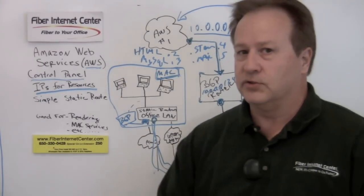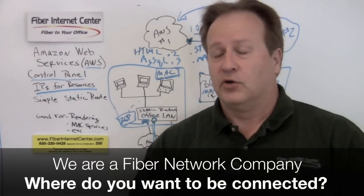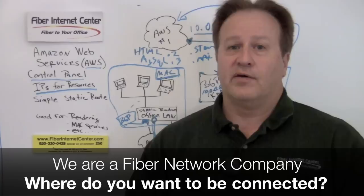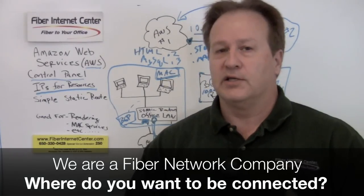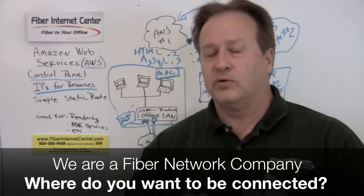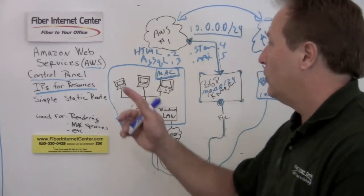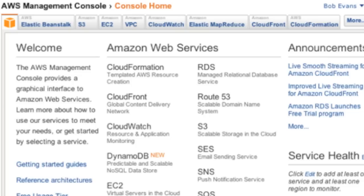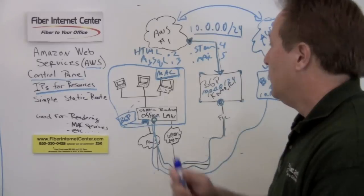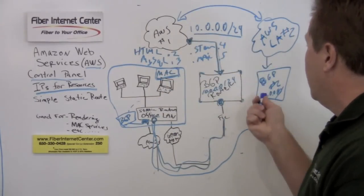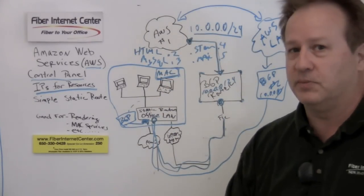So there's a lot of flexibility when you get directly connected to a cloud. The Fiber Internet Center, we can connect you to clouds, your own private clouds that you may have that you have at racks at data centers. We're really flexible and we can get you connections to anything. But what's really cool is take a look at that Amazon's control panel.